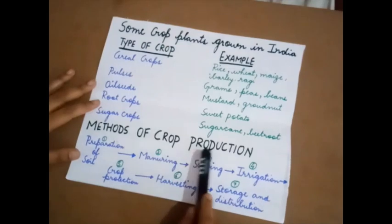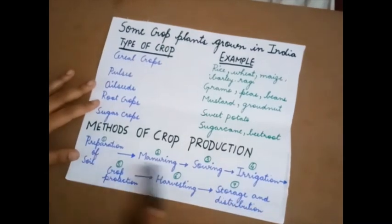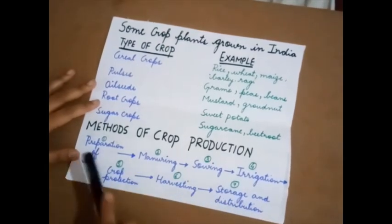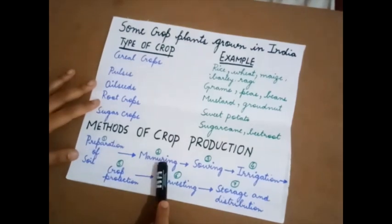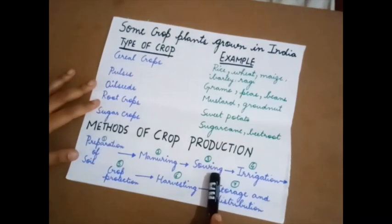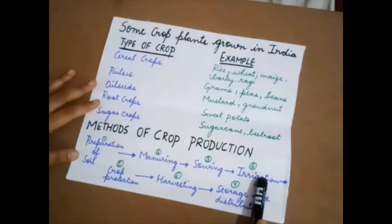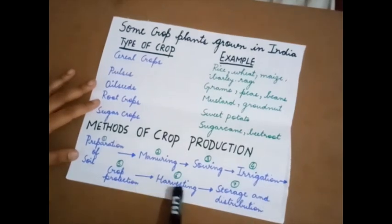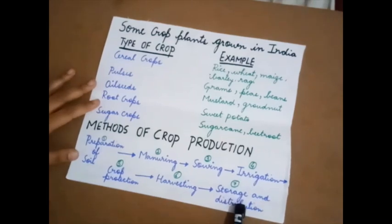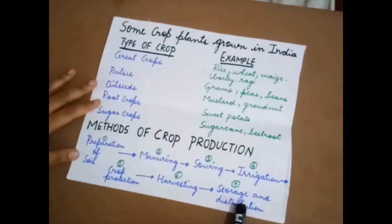Methods of crop production involve seven steps: first, preparation of soil; second, manuring; third, sowing; fourth, irrigation; fifth, crop protection; sixth, harvesting; and seventh, storage and distribution. Let's look into these steps one by one.